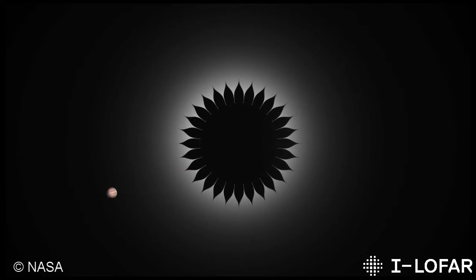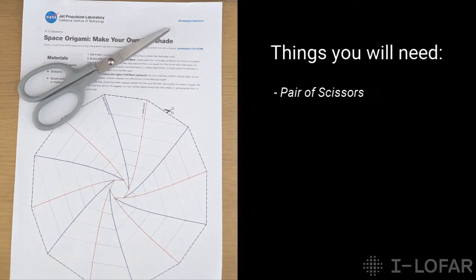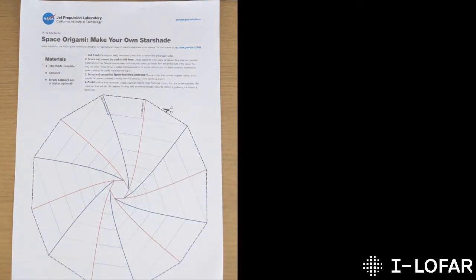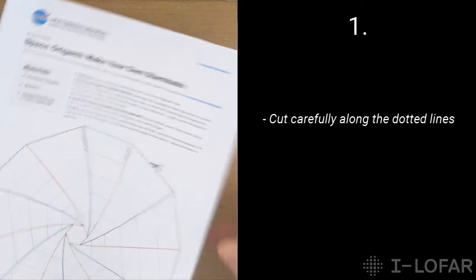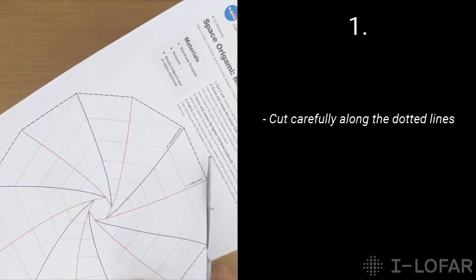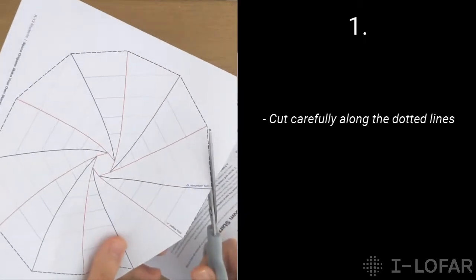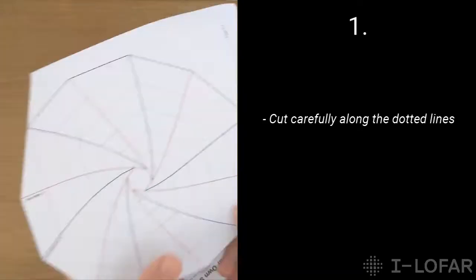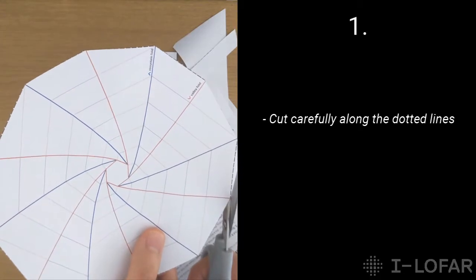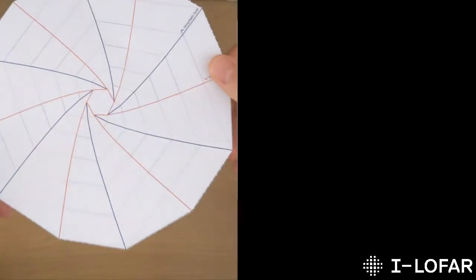And today, to show you how origami is used and works in real life, we'll be making our very own starshade. And so, you need to get yourself a pair of scissors and a ballpoint pen. And the first step is you're going to cut around the rim of the starshade, you can see dotted lines. Now this video is going to speed up, so feel free to pause it at any time until you finish the steps. Alright, you should be left with your starshade template like this, cut carefully along the dotted lines.